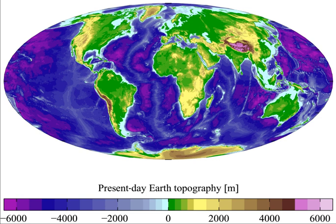Land, sometimes referred to as dry land, is the solid surface of Earth that is not permanently covered by water. The vast majority of human activity throughout history has occurred in land areas that support agriculture, habitat, and various natural resources.